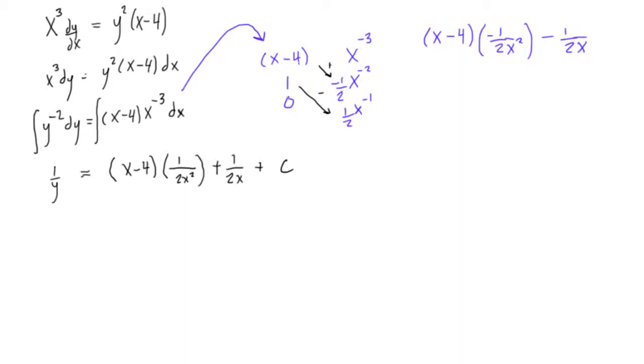So yeah, now what we want to do is just multiply everything. We want to get rid of these things on the bottom. It'll make our lives a little bit easier. So multiply every single term by 2x squared y.